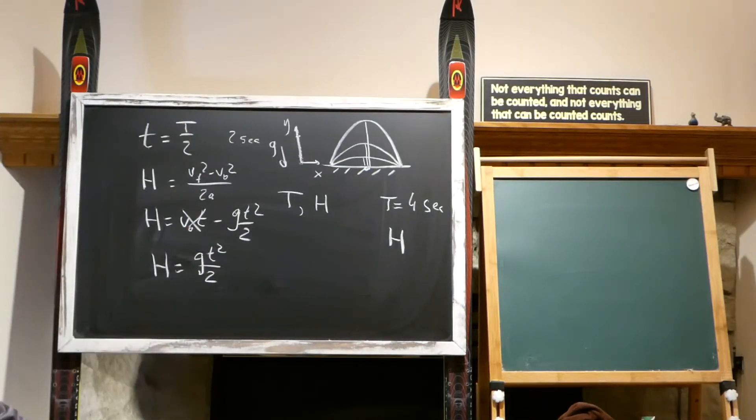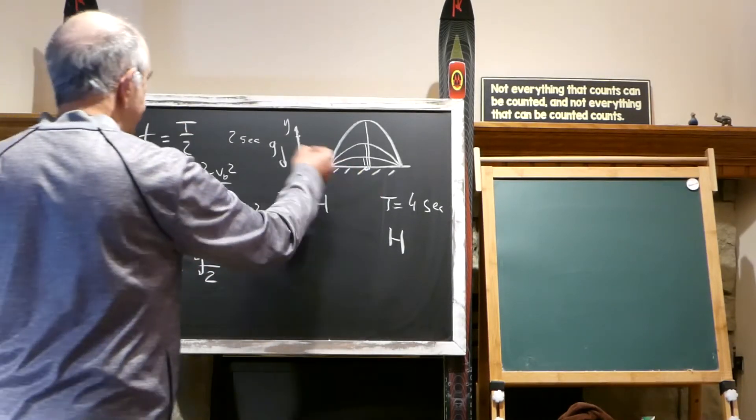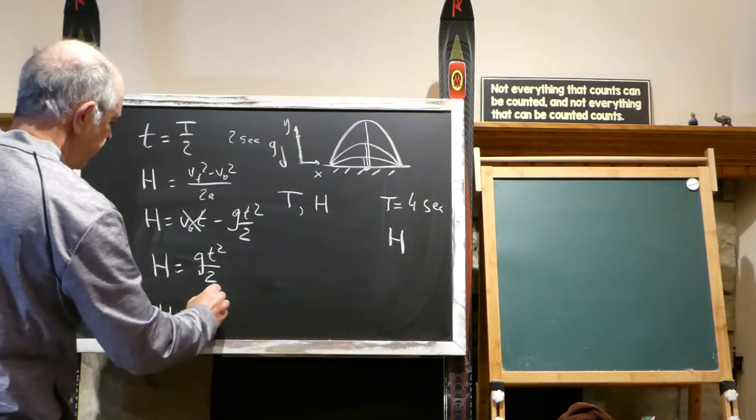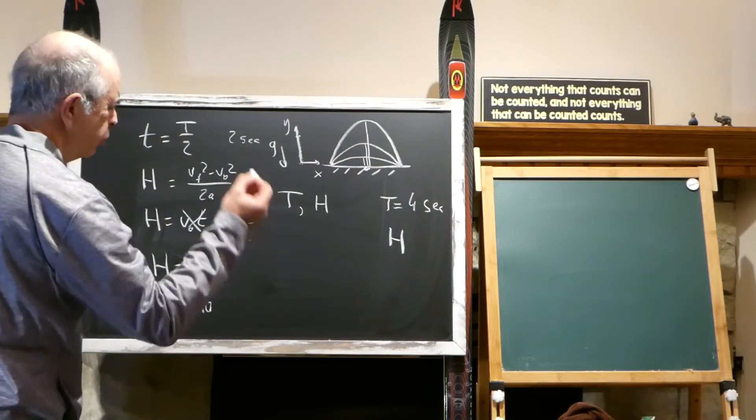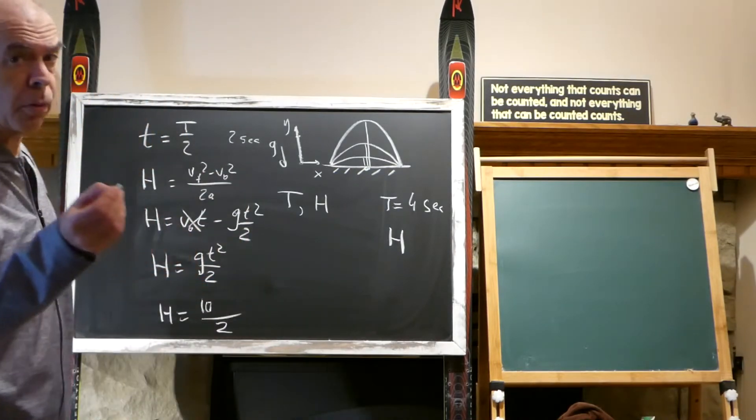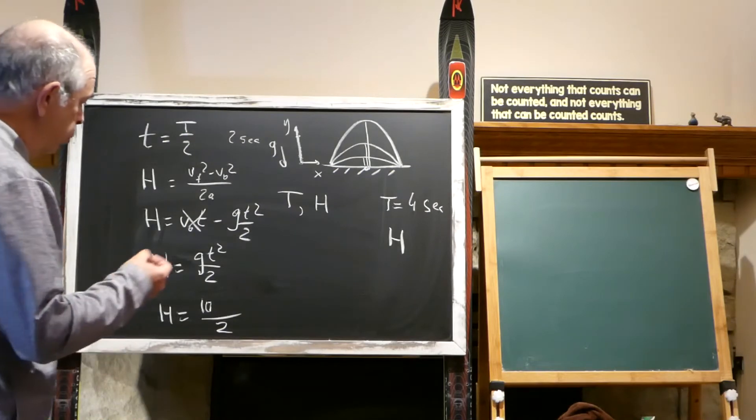T is known. And we can put, if T is 4 seconds, T small is 2 seconds. And we can put g equals 10. I always put 10, not 9.8. But you, of course, are welcome to put 9.8. And this probably would be better for your teacher.